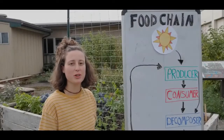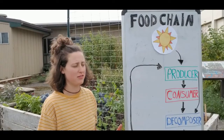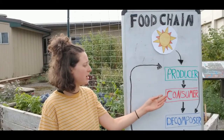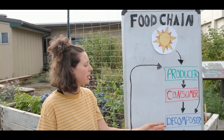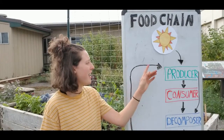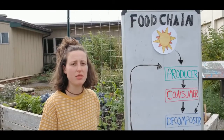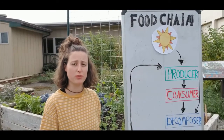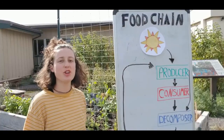So there are three main groups in the food chain: producer, consumer, and decomposer. And the arrows on this represent the way that energy moves through the food chain.